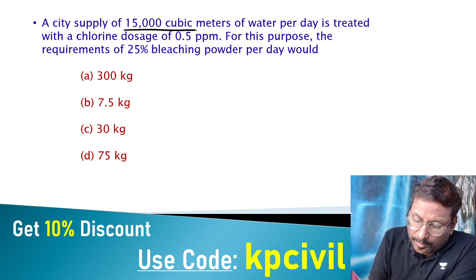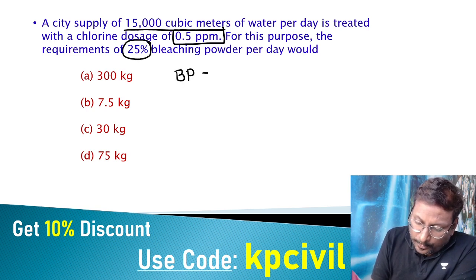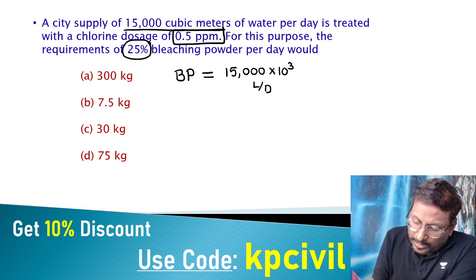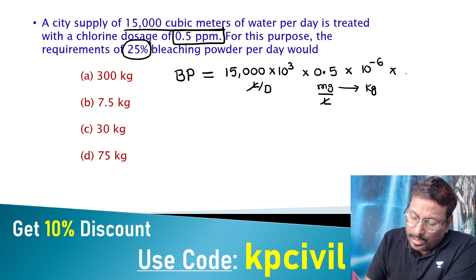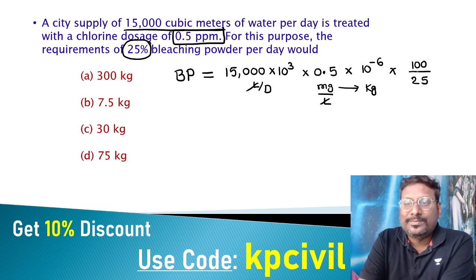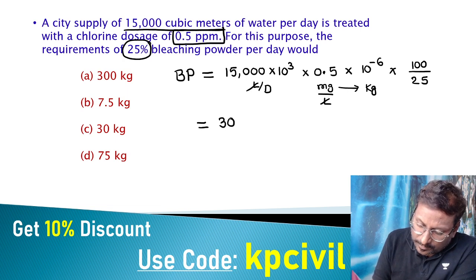A city supplies 15,000 cubic meters of water per day with a dosage of 0.5 ppm. Requirement of 25% bleaching powder: Discharge = 15,000 × 1,000 L/day, chlorine dosage = 0.5 mg/L. Converting milligrams to kg (×10⁻⁶), then multiplying by 100/25, you get amount of bleaching powder = 30 kg per day.